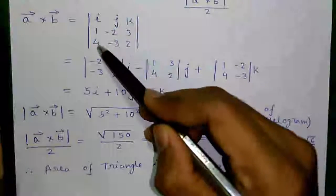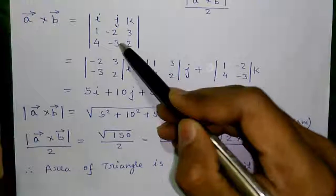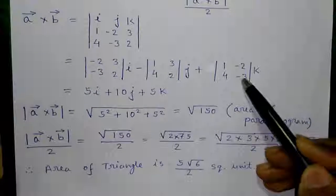plus hide row 1 and column 3. So we are left with 1, 4, -2, -3, 1, 4, -2, -3 into K.